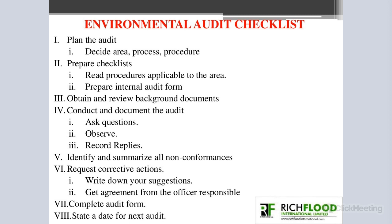The second step in this checklist is preparing the checklist itself. The procedures relating to the area to be audited are critically looked at, and the audit form is also designed. The third content is obtaining and reviewing background documents, which is done in the pre-audit phase. The fourth content is conducting and documenting the audit, which corresponds to the on-site audit.